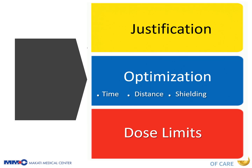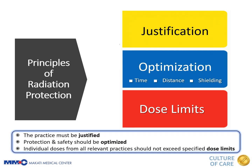Now that we have an idea of the definition, types, uses, and sources of radiation, let's move on to the next important topic. You will see three key words: justification, optimization, and dose limits — we'll talk about each in detail. These three words represent the principles of radiation protection, which is one of the most important topics in this lecture.